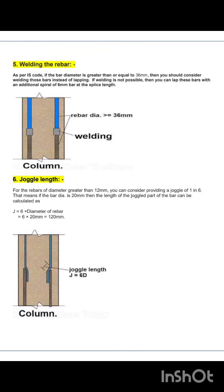Rule 6 is joggle length. For rebar with a diameter greater than 12mm, you should provide a joggle of 1 in 6. That means if the bar diameter is 20mm, the length of the joggle part of the bar is calculated as J = 6 × diameter = 6 × 20 = 120mm. In the figure you can clearly see how the joggle length is calculated, so basically J = 6 times D.